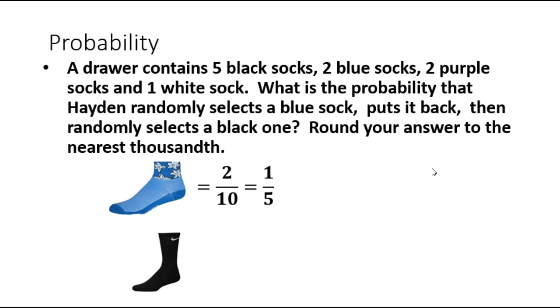So we've got a black sock now. He put it back and then randomly selects a black one. He has five black socks available, so this is five over ten which is one-half. And again if he kept it it would have been five over nine. That's the only real big difference here but he had ten to choose from because he put it back.